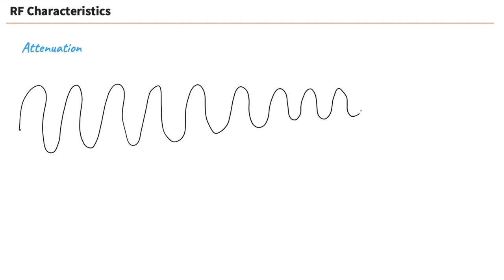We're starting off with attenuation, and we've talked about this previously. Attenuation is, as the life cycle of a waveform goes on, it slowly loses power. It does so because it runs into things and deals with resistance in the atmosphere. As it ages, it attenuates or loses power.